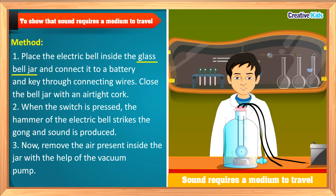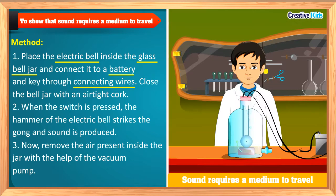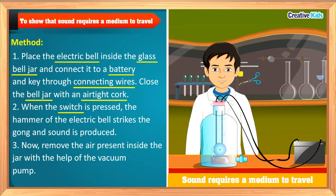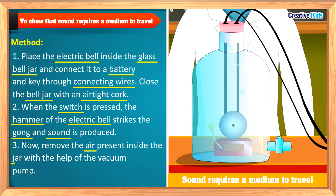Now let us start the activity. Take a glass bell jar and place the electric bell inside it, then connect it to a battery and a switch with the help of connecting wires. Close the glass bell jar with an airtight cock. Press the switch to the on position — you will observe that the hammer of the electric bell strikes the gong and a sound is produced.